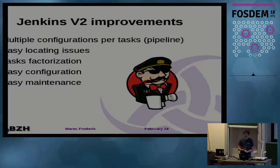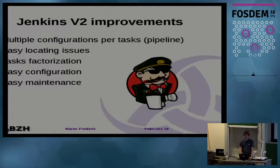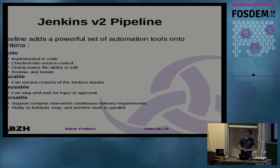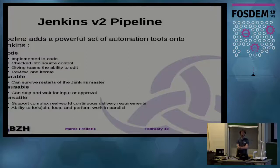The pipeline is the main feature. We can have easy locating of issues, task factorization, easy configuration and maintenance. The Jenkins version 2 pipeline has a powerful set of automation tools. The code can be easily edited, iterated, and reviewed.